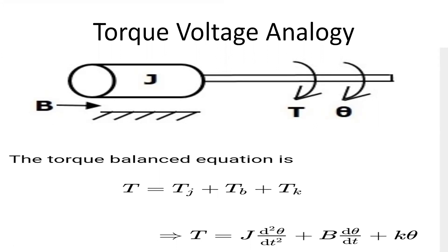Similarly, if we see the torque voltage analogy, considering the mathematical equations of a rotational mechanical system — where torque t is applied causing an angular displacement theta — the torque balance equation is t equals t_j plus t_b plus t_k. This gives t equals J·d²θ/dt² plus b·dθ/dt plus k·θ.